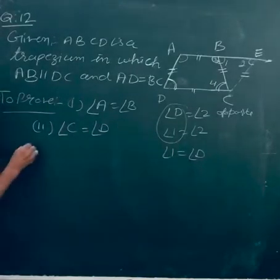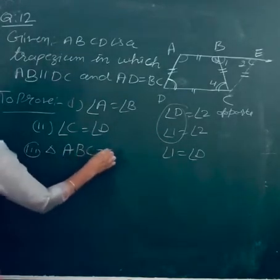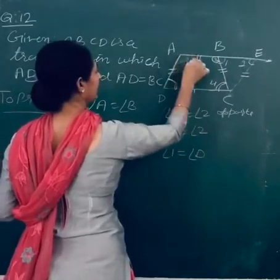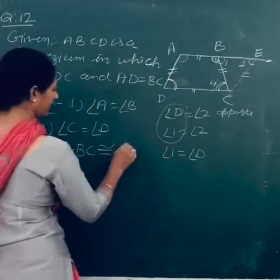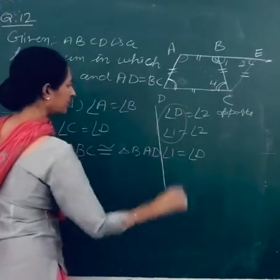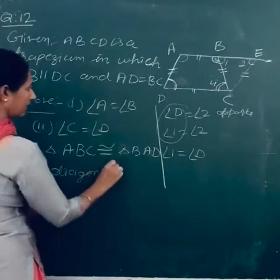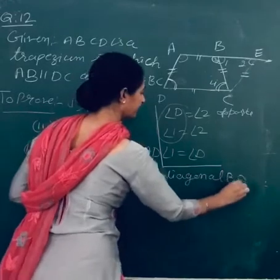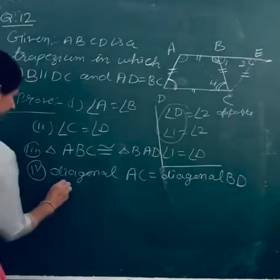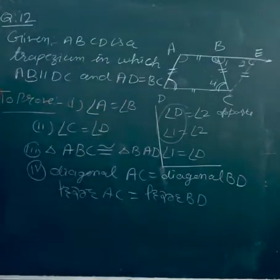Third point: triangle ABC congruent triangle BAD. We have to draw diagonals. I'll draw a dotted line. First we prove triangle ABC congruent triangle BAD. Fourth point: diagonal AC equal diagonal BD.